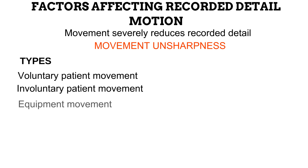Another common type of movement unsharpness is due to equipment movement. An unsteady tube can move slightly during an examination, causing blurring. This is why the radiographer must ensure the tube is locked in place before proceeding to acquire the image.